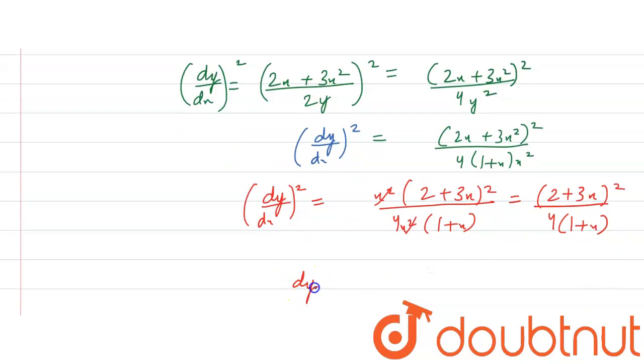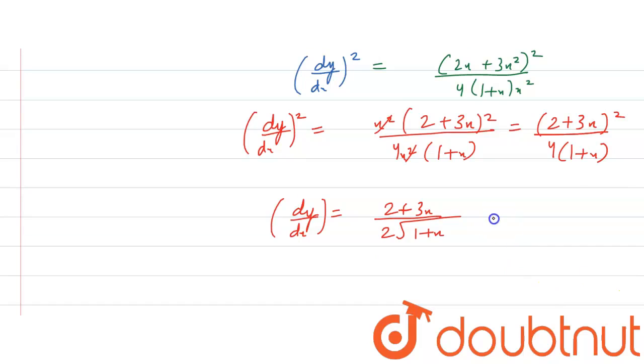So, now dy by dx will be equals to 2 plus 3x upon 2 root 1 plus x. Now, the question is saying that it passes through the origin. So, x will be equals to 0. So, the slope comes out to be 2 by 2 which is equals to 1 which is equals to plus minus 1.